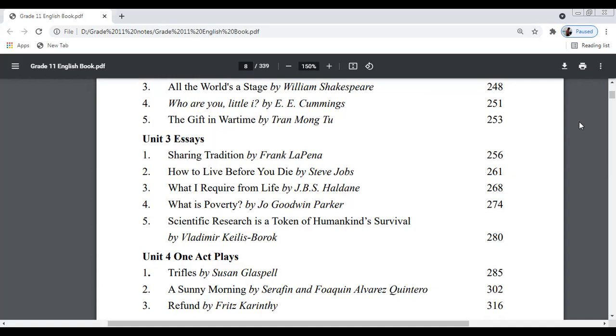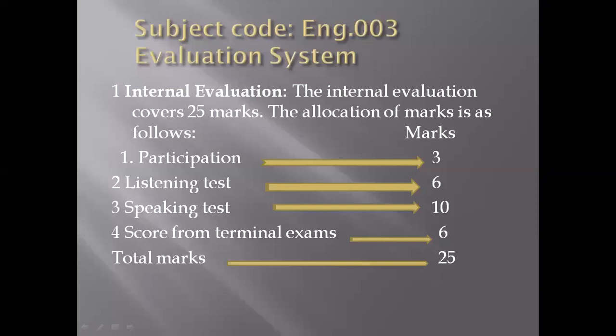Now let's discuss the evaluation system. The subject code for this subject is English 003. There is an internal evaluation and an external evaluation. The internal evaluation covers 25 marks: participation earns 3 marks, listening 6 marks, speaking 10 marks, and terminal exam scores 6 marks — totaling 25 marks for internal evaluation.